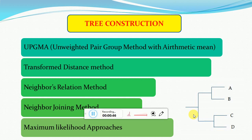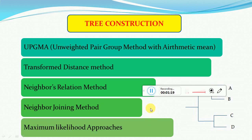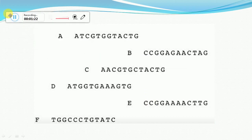There are a few methods for constructing a tree like this. In this video I'll be explaining UPGMA — Unweighted Pair Group Method with Arithmetic Mean. The rest of the methods I'll cover in the next videos. Briefly, those methods are: UPGMA, Transform Distance Method, Neighbors Relation Method, Neighbor Joining Method, and Maximum Likelihood approaches.